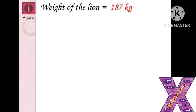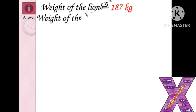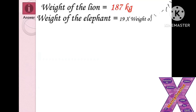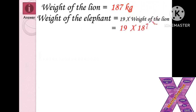Let us see how to present the answer. We know the weight of the lion, so we write: weight of the lion is equal to 187 kilograms. We have to find the weight of the elephant. We know that the weight of the elephant is equivalent to 19 times the weight of the lion, so we calculate 19 times 187 kilograms.